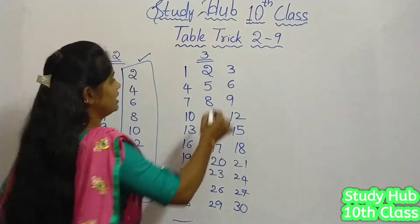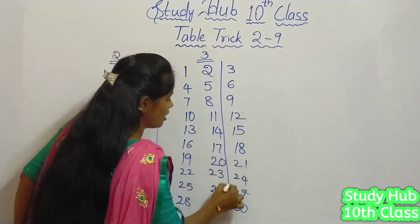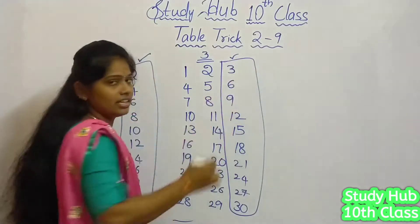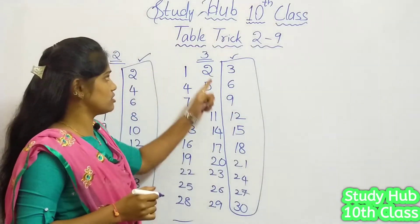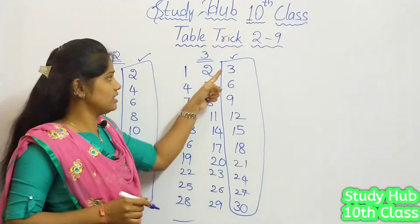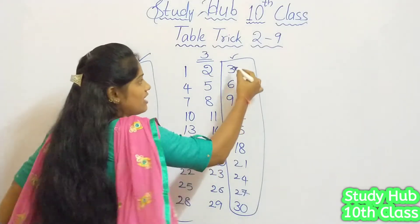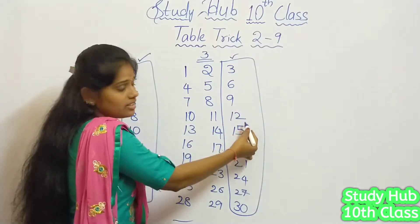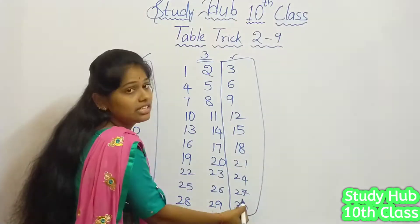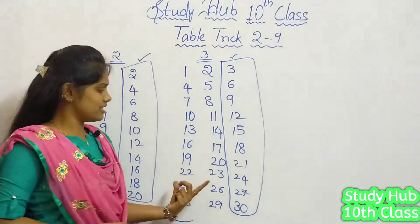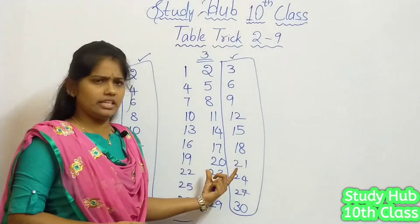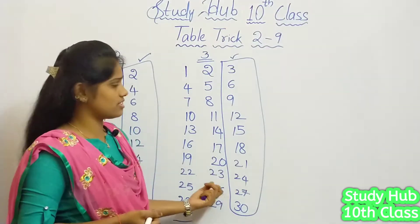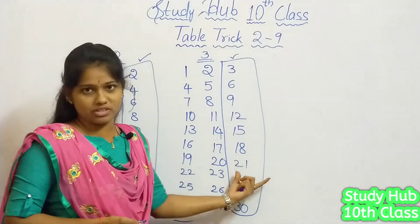Friends, what are the numbers we got in the third column? Column number 3 — vertical line number 3 — gives us the resultant values of the 3 multiples. These are the multiples of 3: 3 ones are 3, 3 twos are 6, 3 threes are 9, 3 fours are 12, 3 fives are 15, and so on up to 3 tens are 30. I hope this is an easy process, but there is a small disadvantage — it is a time-taking process.